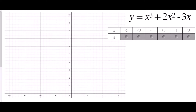I'm going to begin by drawing the graph of y equals x cubed plus 2x squared take away 3x. This is a cubic graph because the highest power is x cubed, and I'm going to plot it from x equals negative 3 up to x equals 2. I'll use my calculator to find each of the y values.